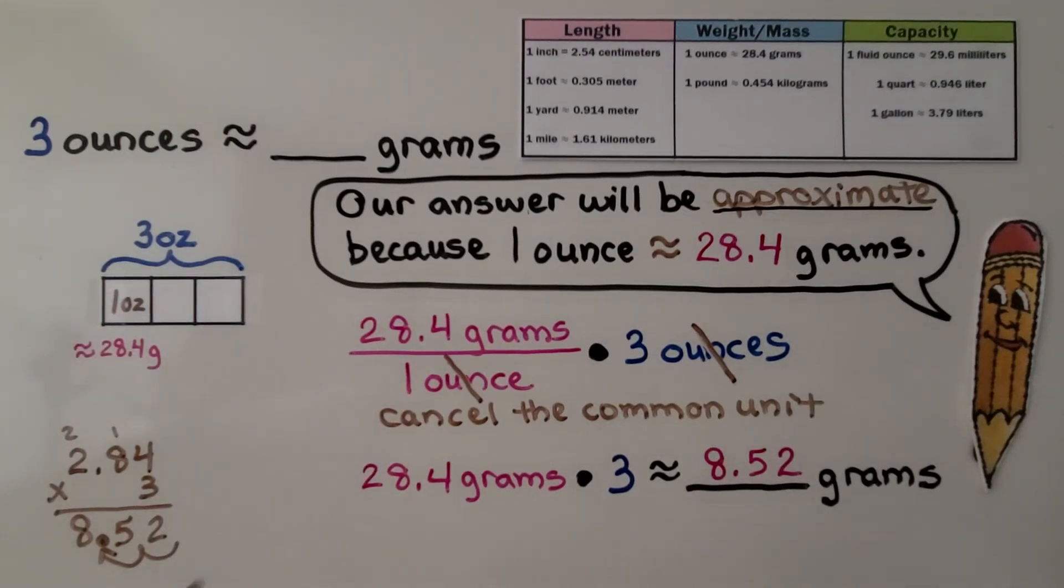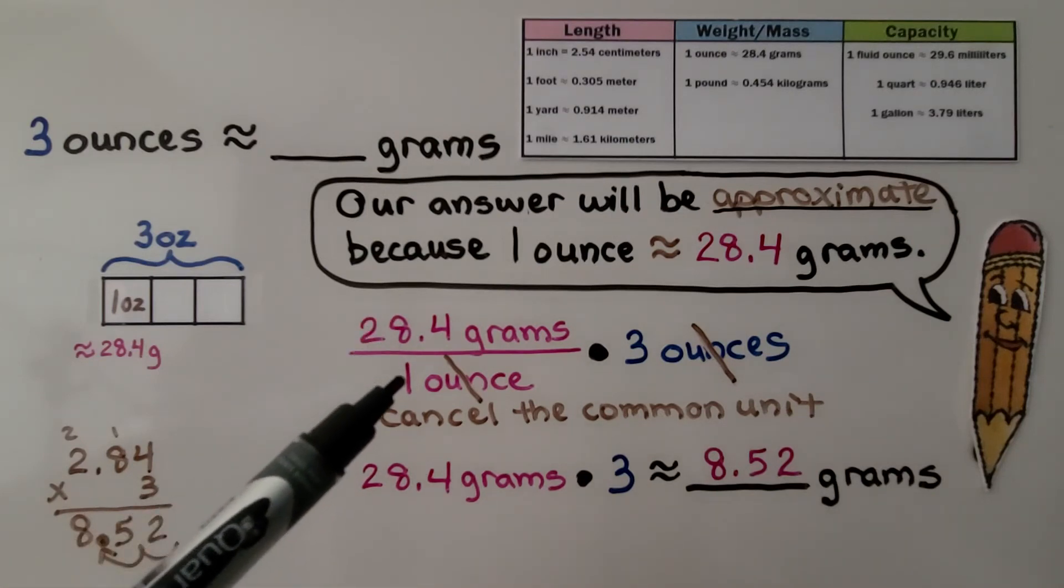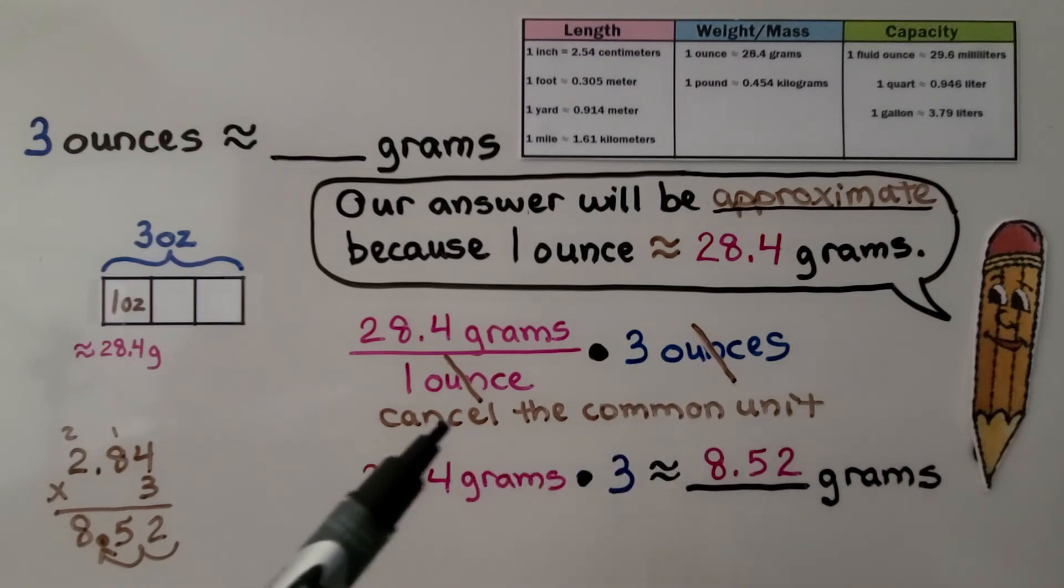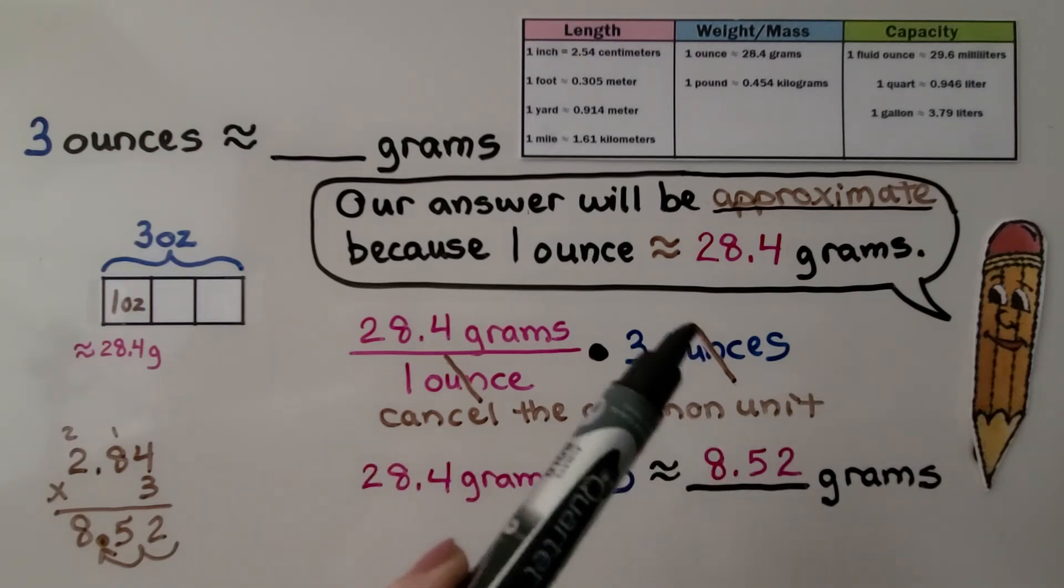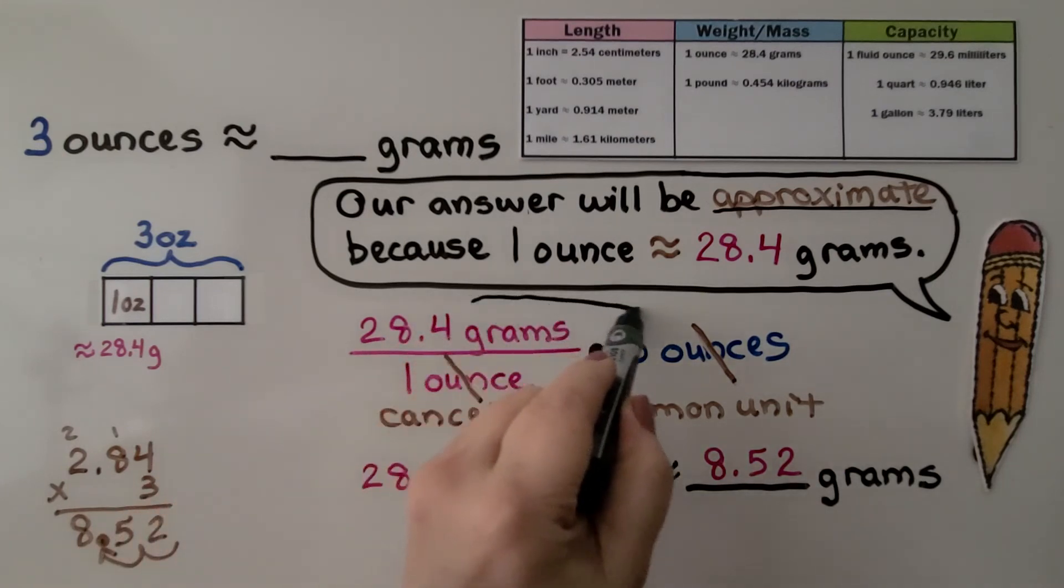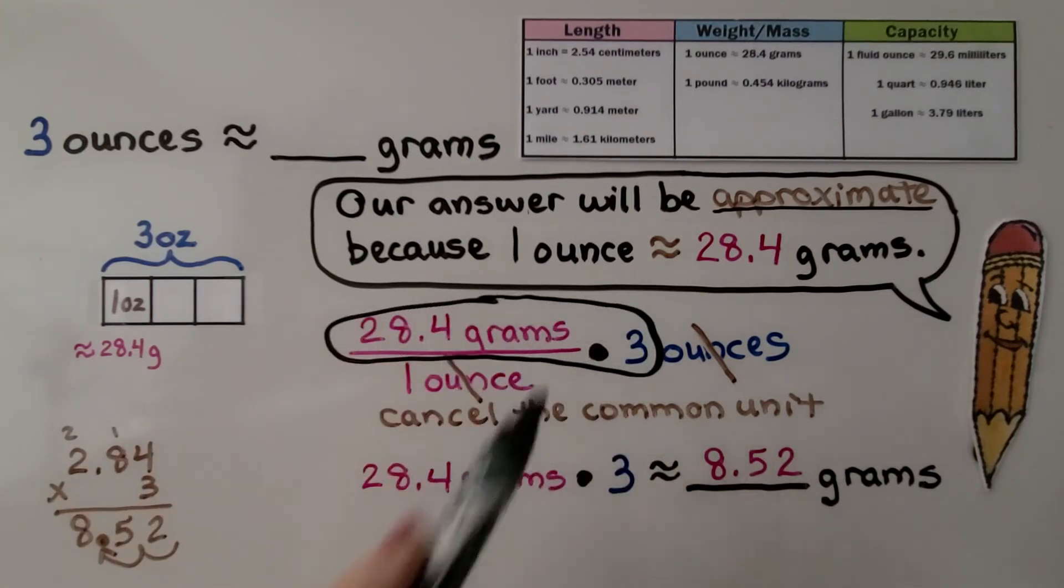We have a unit rate of 28.4 grams per 1 ounce. We're going to multiply it by 3 ounces. We're going to cancel that common unit, ounce, and we're going to be left with 28.4 grams times 3.